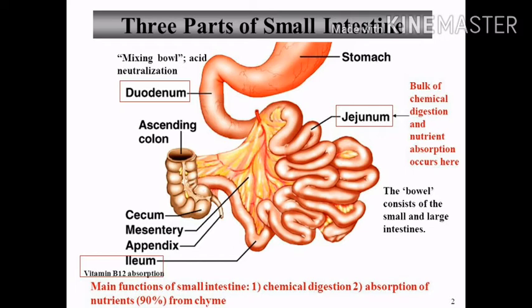The pancreatic juice contains many digestive enzymes such as amylase, which is responsible for splitting polysaccharides — poly means many, saccharides means sugar molecules. Lipase splits fats into smaller globular forms. Trypsin and chymotrypsin split proteins.